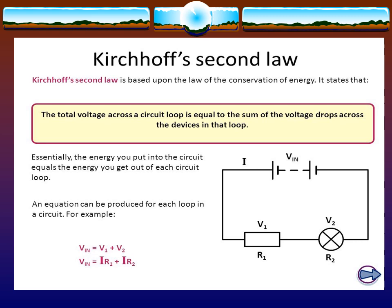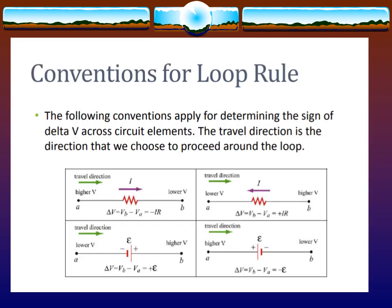Essentially, the energy you put into the circuit equals the energy you get out of each circuit loop. An equation can be produced for each loop in a circuit. For example, VIN equals V1 plus V2, also equal to I times R1 plus I times R2.